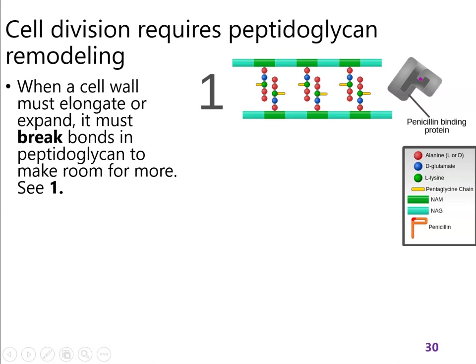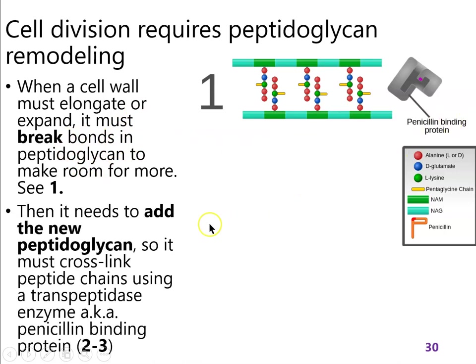Before we get to that, let's think about what a cell has to do when it grows. A bacterial cell has a thin, weak, waterproof membrane surrounded by a tough, flexible but not waterproof peptidoglycan layer. The peptidoglycan layer limits the size of the cell — if osmotic pressure builds, it can't keep expanding or it will pop. So if the cell wants to get bigger, it has to make the peptidoglycan bigger by breaking bonds and inserting new peptidoglycan into the break.